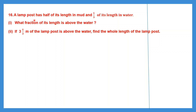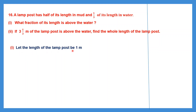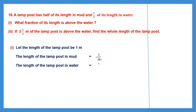Question 16. A lamp post has half of its length in mud and one third of its length in water. Half of its length means one by two, and one third of its length is in water. We need to find what fraction of its length is above the water. Since we don't know the total length, we consider it to be 1. So let the length of the lamp post be 1 meter. The length in mud is 1/2 and the length in water is 1/3.